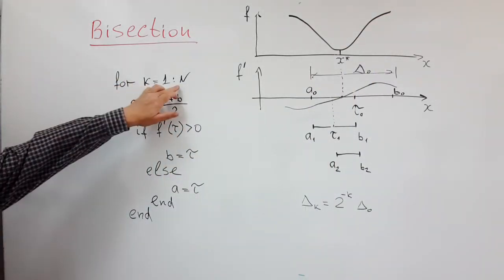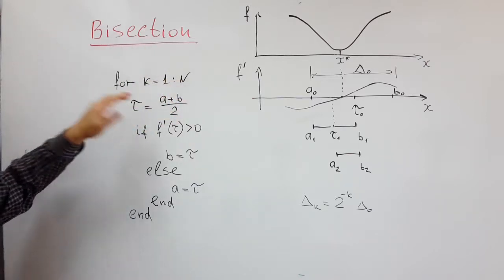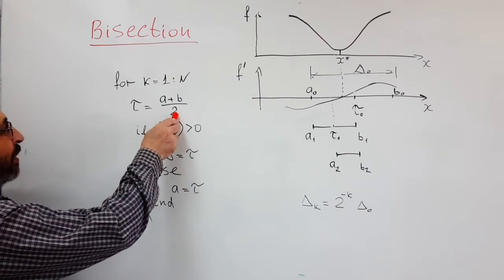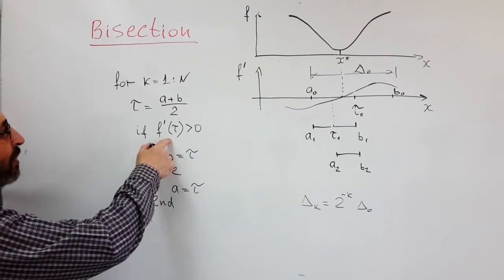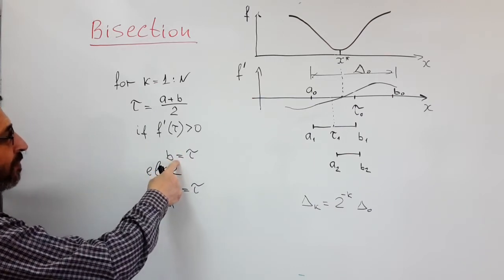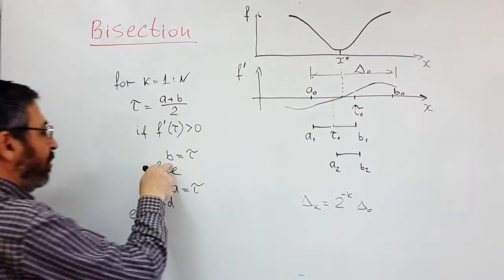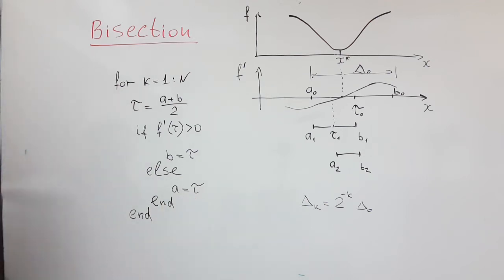We perform n iterations, n maybe ten, twenty, thirty, not a very large number. We evaluate the middle point of the interval and check the sign of the derivative at this middle point. If it is positive then we move the right side of the interval to this point, otherwise we move the left side of the interval. As you see, the implementation is extremely short.